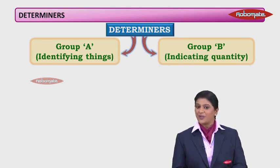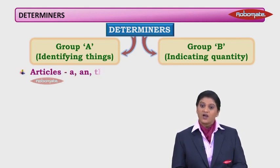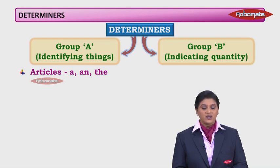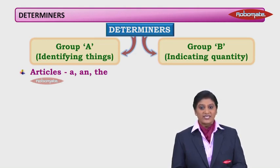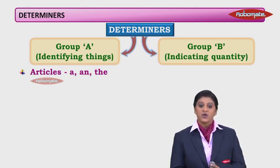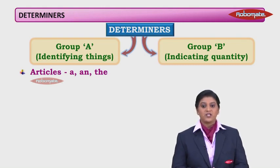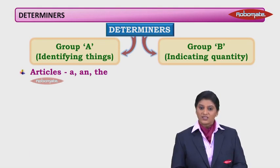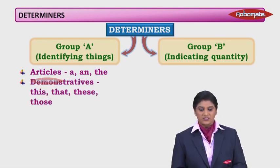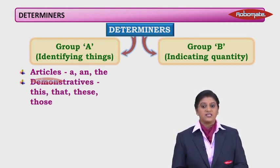Let us have a look at a few examples of group A determiners. First of all, articles are determiners and they fall in group A. When we use 'a' and 'the', we are telling a lot about the noun. When I say 'a doctor', I mean any doctor would do. But when I say 'call the doctor', I am talking about a particular, specific doctor. Along with articles, demonstratives are also group A determiners. Demonstratives are words like this, that, these, those — but when they come before a noun, they become determiners.